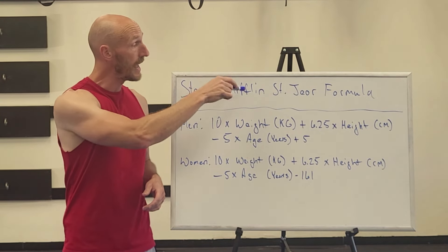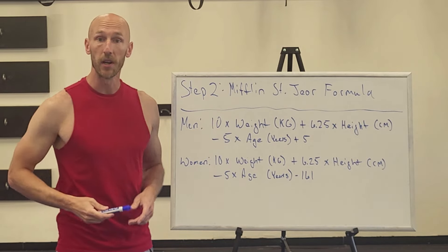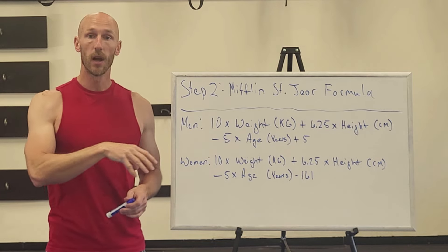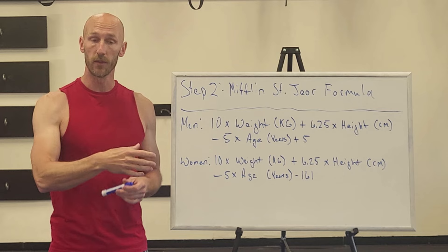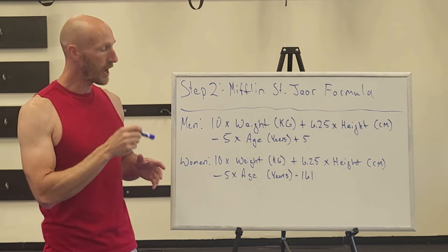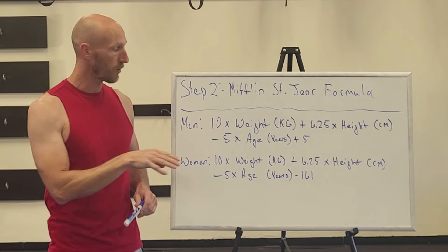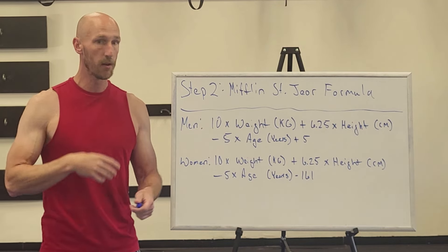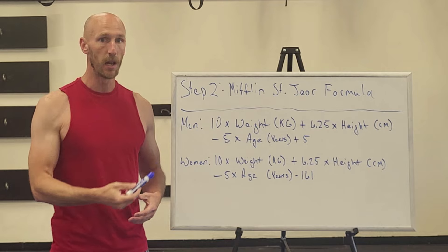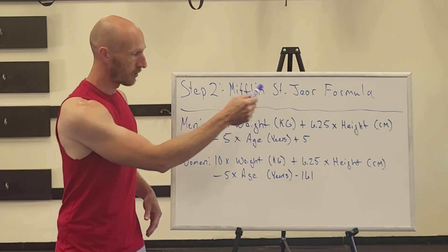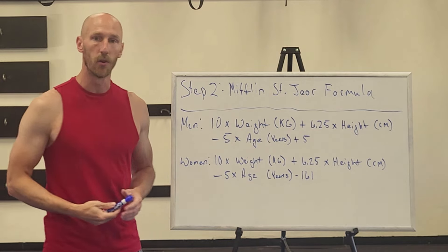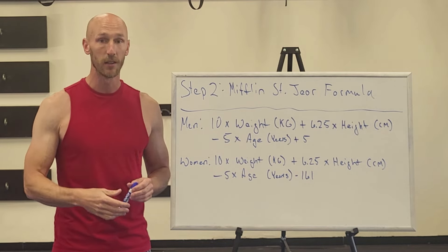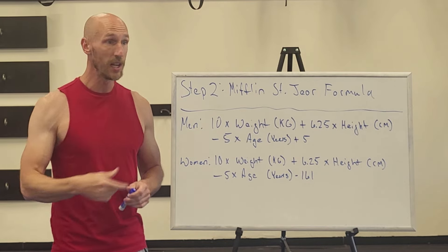Step two is what I call the MSJ formula — I just go with the abbreviation because I don't know how to pronounce it. The first part of this formula helps us figure out very accurately our BMR, the calories we burn at rest. What I love about this is that it has different equations for men and women, and it takes into account your weight, height, and age, giving us a very accurate measure of our BMR.